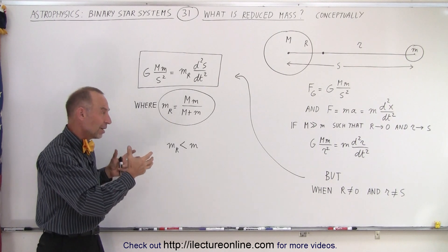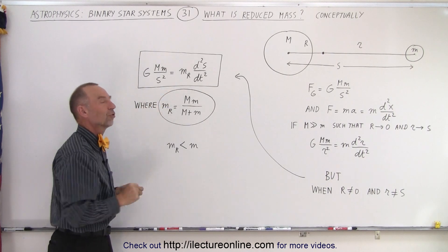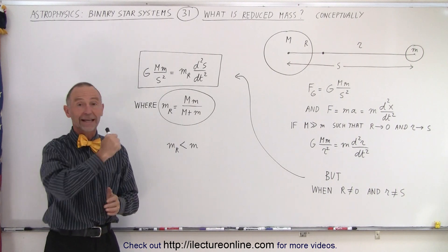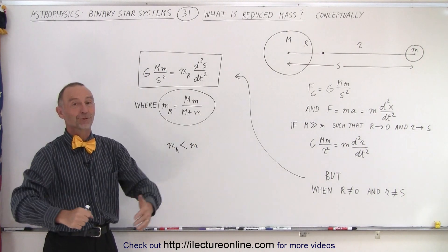But at least this way you understand we need this reduced mass because of the situation that the barycenter is not at the center of the large object, and that is why we need that reduced mass.